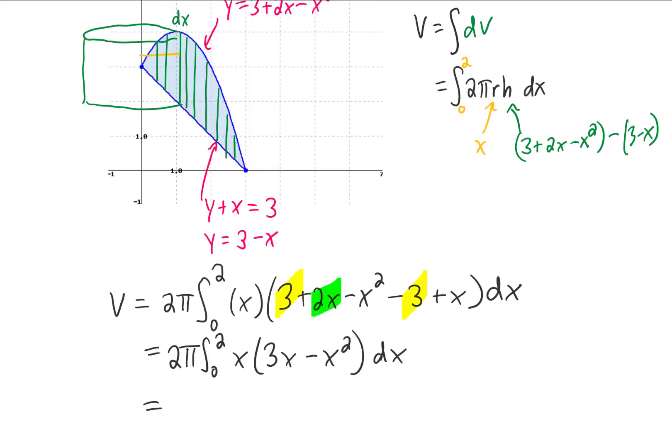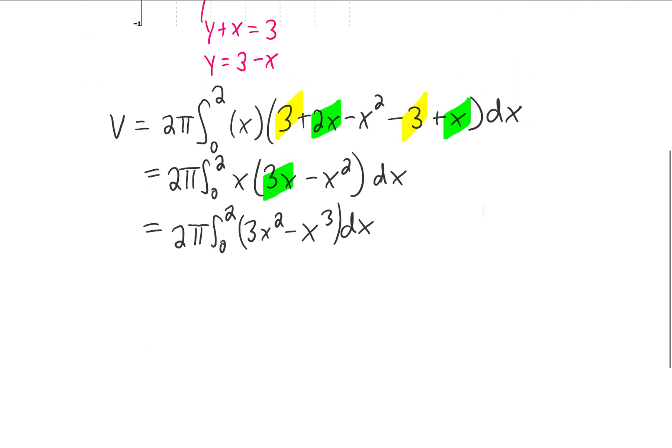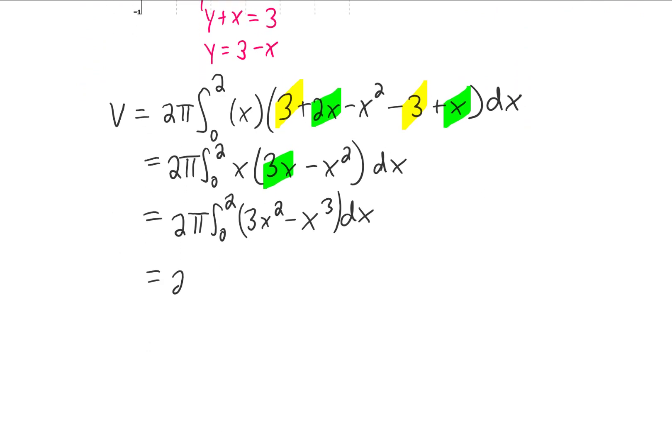The 2x and the x in the integrand here turn into the 3x, and we can distribute that x through those parentheses to give us 3x² - x³, and now we can integrate that with respect to x. Plug in our limits and we'll be finished.